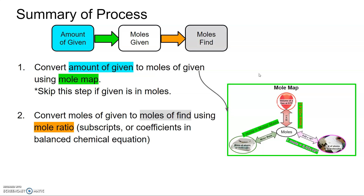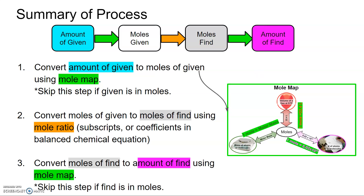The second step is to convert from the moles of given to your moles of find using mole ratios. For all of these problems, the mole ratios are going to come from the subscripts in the chemical formula. But remember, later on we're going to see examples where the mole ratios come from the coefficients in a balanced chemical equation. The last step is to convert from moles of find to the amount of find using, once again, the mole map. You can skip this step if your find is in moles — if they're asking you to find your value in moles, you would stop there.